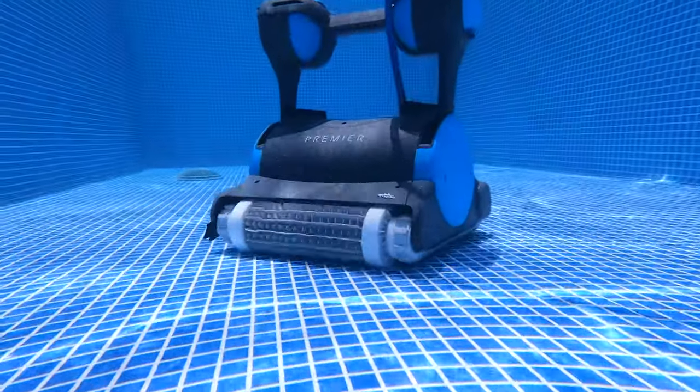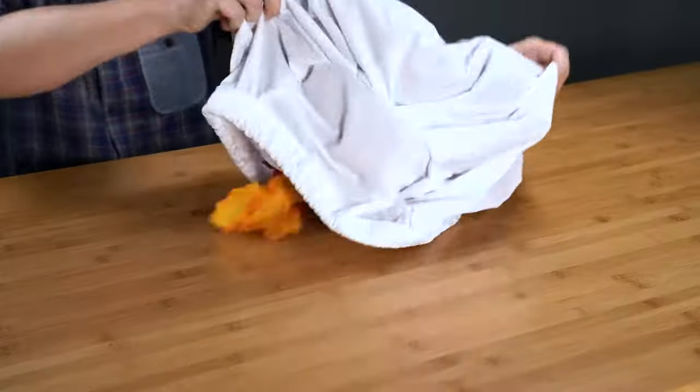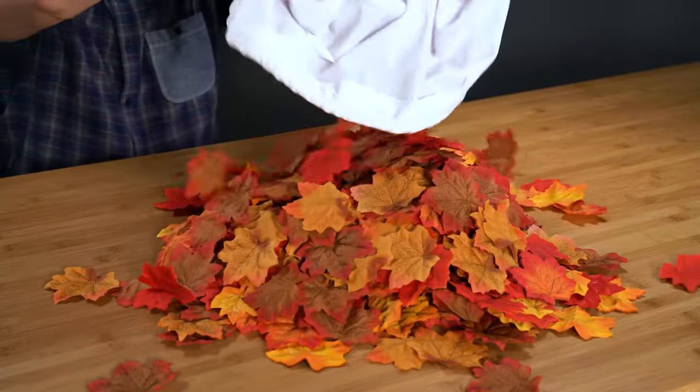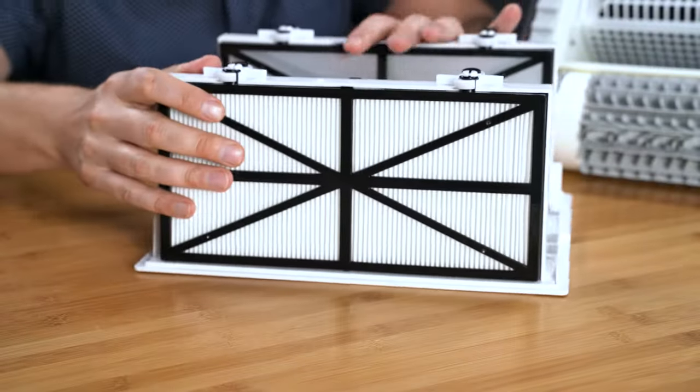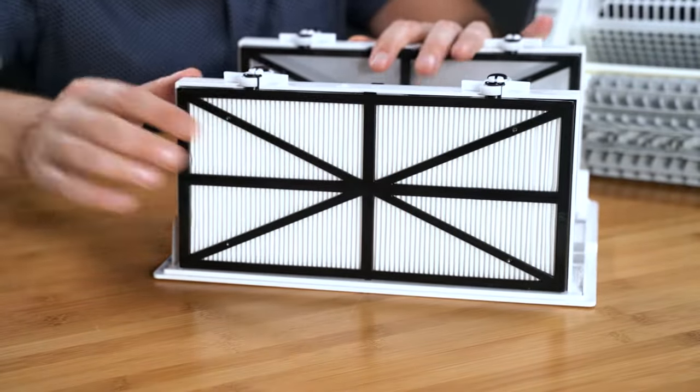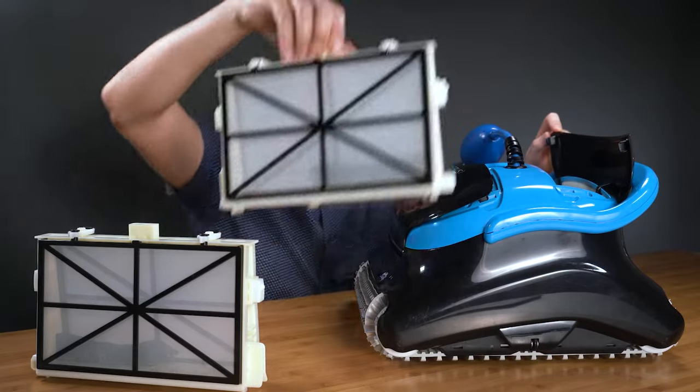If it were like the Dolphin Premier with multimedia filtration, that would be perfect. Then you could customize cleanings with an oversized debris bag like this for the big stuff or a micro-fine filter for all the little debris of sand and silt. But the CC Plus has just one filter for a whole bunch of different debris.